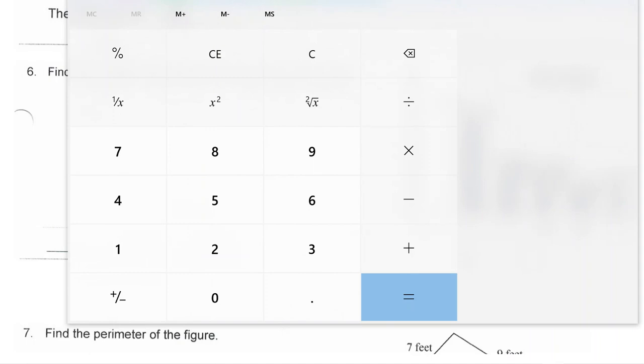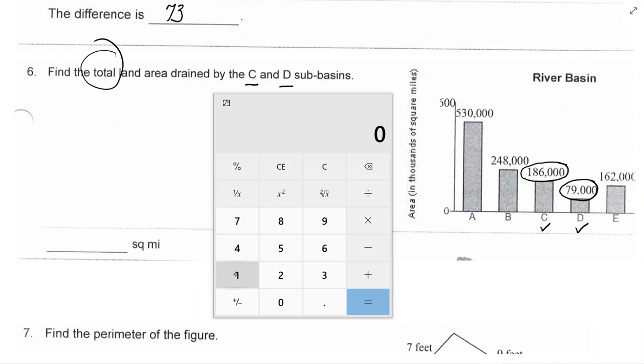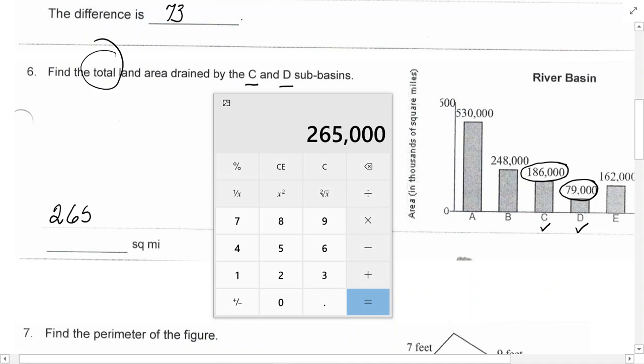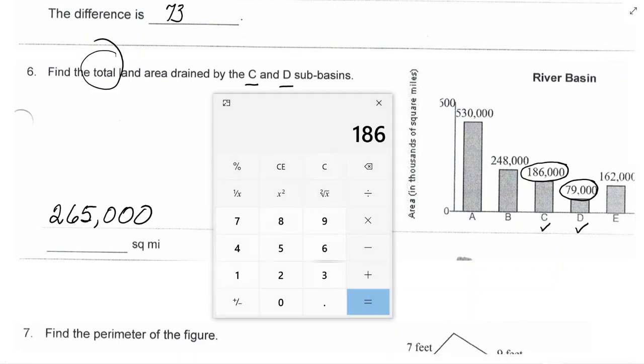Hang on just a minute. All right, I am going to add 186,000. So, 0, 0, 0, 0, 0. I am going to add it to 79,000. Add them, equal sign, it is 265,000 square miles. So, if I did it again, 186,000 plus 79,000 equals. There we go.